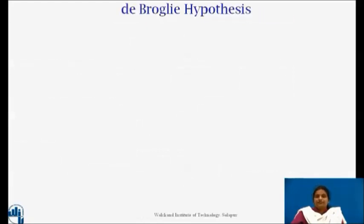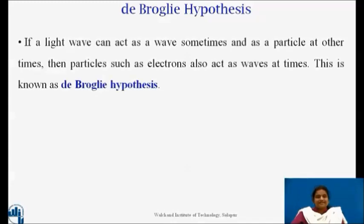In 1924, Louis de Broglie extended the wave-particle dualism of light to the material particles. He reasoned out that nature exhibits a great amount of symmetry. Therefore, if a light wave can act as a wave sometimes and as a particle at other times, then particles such as electrons also act as waves at times. This is known as de Broglie hypothesis.